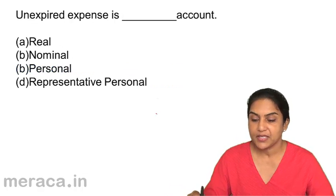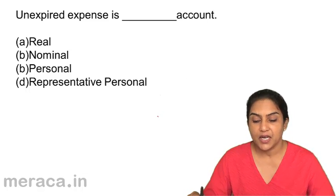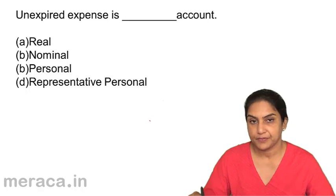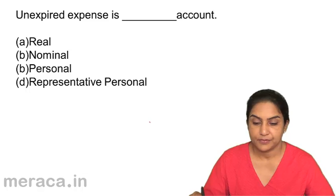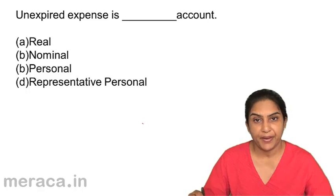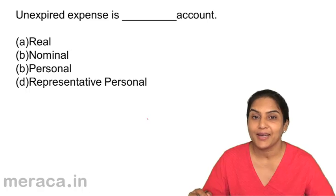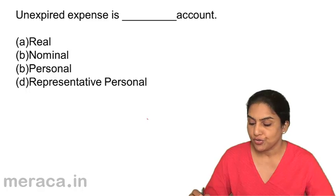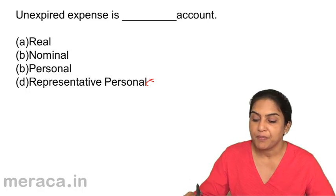Question 3: Unexpired expense is — A: a real account, B: nominal account, C: personal account, or D: representative personal account. Unexpired expense is an expense for which money has been paid but the entire service has not yet been rendered — you can carry it forward. So unexpired expense is also a representative personal account.